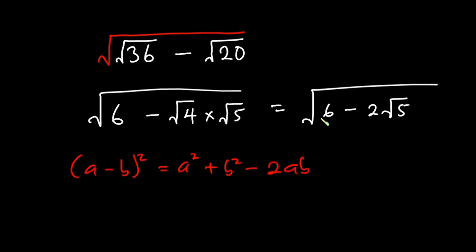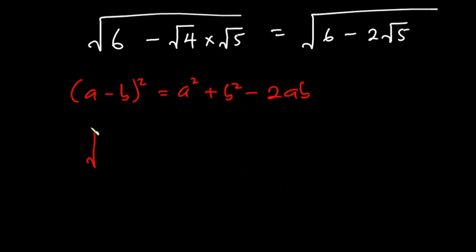We're going to manipulate this whole thing to get something like this. Now let's put our big square root down. This 6 could be written as 5 plus 1, then we have minus 2 square root of 5.